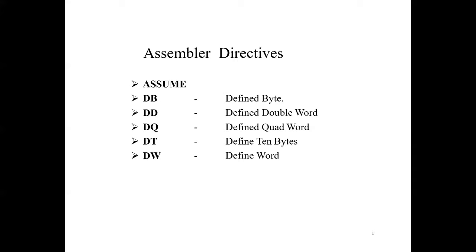If names are assigned to variables, constants, and addresses, the assembler uses these names to get the corresponding data items or address when the programmer refers to them in instructions. Assembler directives are used to assign names to variables and constants. Labels are used to give names to addresses. Some commonly used assembler directives are: ASSUME, DB, DD, DQ, DP, and DW. We will explain them one by one.